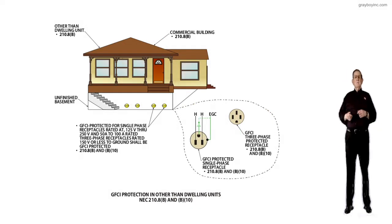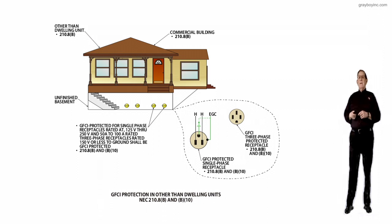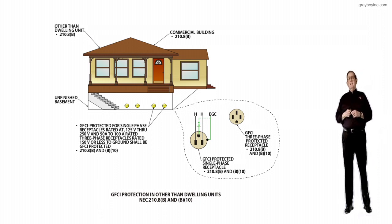This illustration covers the rules for GFCI protection in other than dwelling units in accordance with 210.8B and B10, B as in boy.